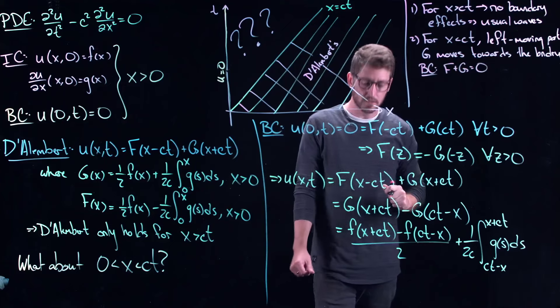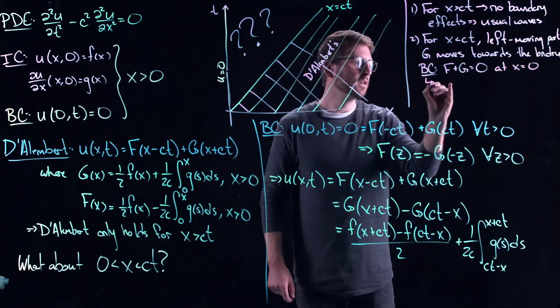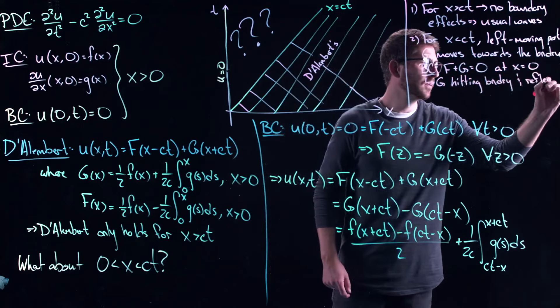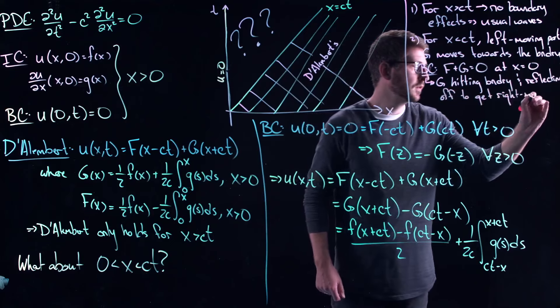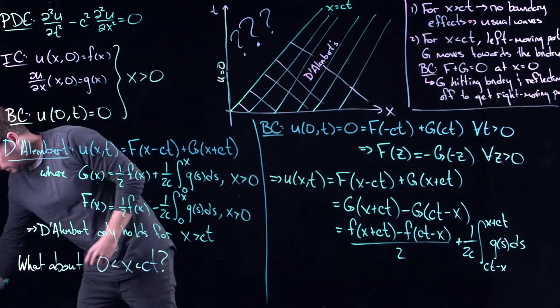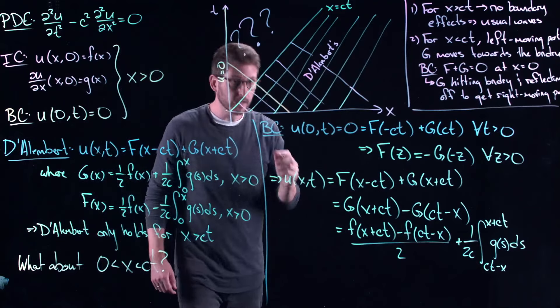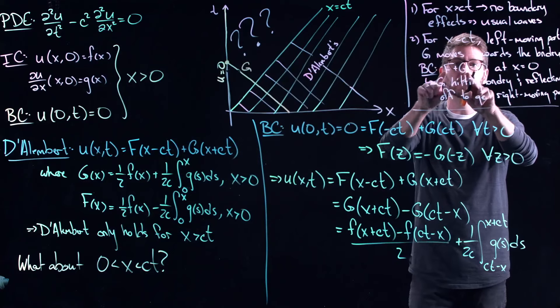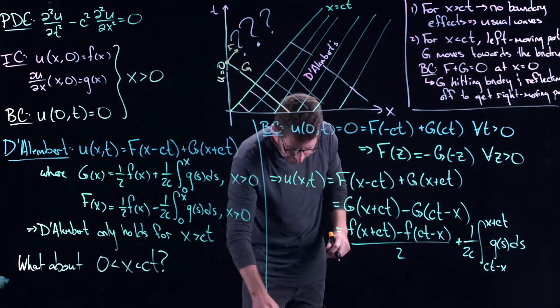This is sort of like a conservation law in some regard. At x equals zero, right? This represents the g part. This is g hitting the boundary and reflecting off to get a right moving part. Right? So what you can see here is that this little conservation says that, let's draw it on our picture. Here we get D'Alembert. Now the g part comes flying up like this and eventually it hits the boundary and at that boundary you have this exchange. The g part can be exchanged for the f part. And so what you get now is a reflection that comes off as the f part.